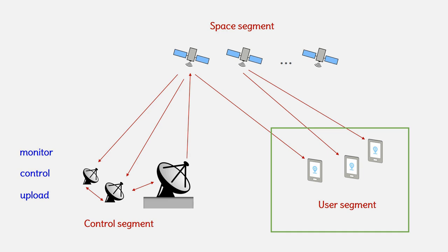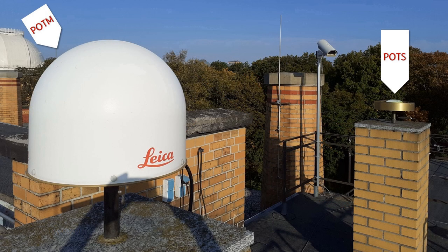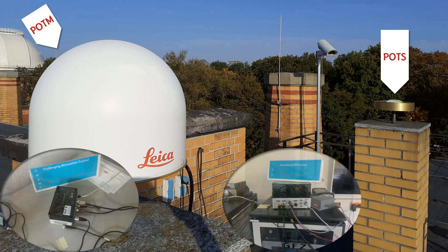The user segment refers to the equipment that processes the received GNSS signals to derive the location and time information. The primary components of the user segment are antennas and receivers or processing units. These parts may be integrated into one simply or physically separate. Here you see the antennas of two stations we use in research. The antennas are mounted on the building's roof while the receivers are safely kept in the lab.